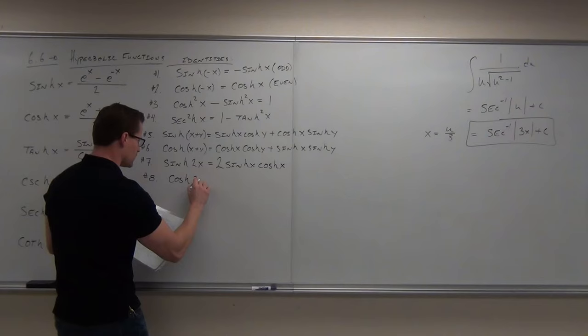Back-substituting: w = cosh(u) and u = 3x, so the final answer is cosh³(3x) / 9 + C. You can do a double substitution — just pick a different letter. It's the same derivative and integral steps you've been doing. We just have a new integration and derivative table.